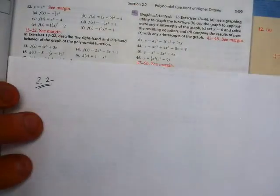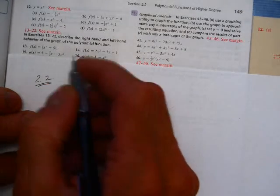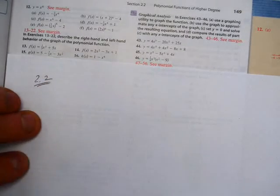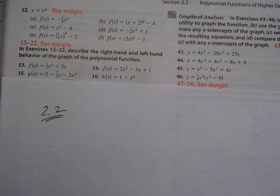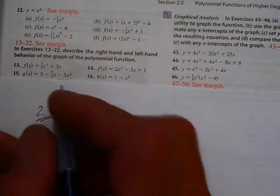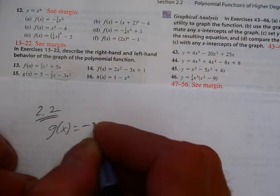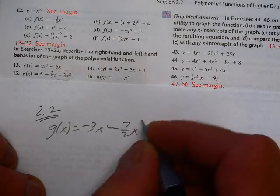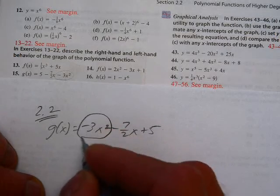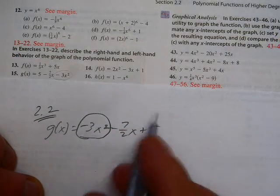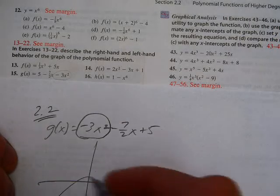So for fifteen, the big thing here is you've got this negative three X squared is the most powerful thing, so that's going to lead the way. One thing that might help is to maybe write it in proper order. This one's not in the proper order. So if we go G of X is equal to negative three X squared minus seven halves X plus five. This is my leading term. That's my leading coefficient.